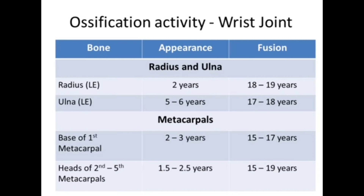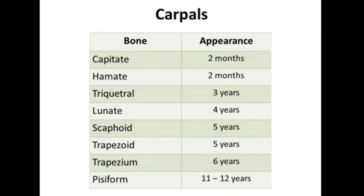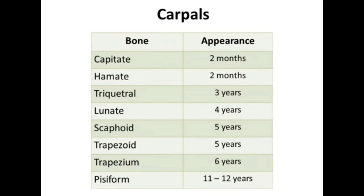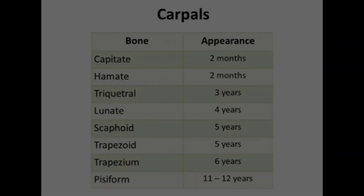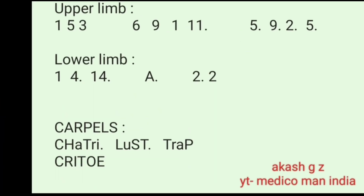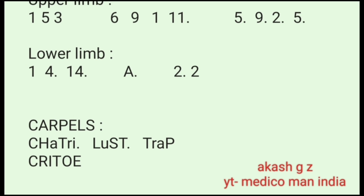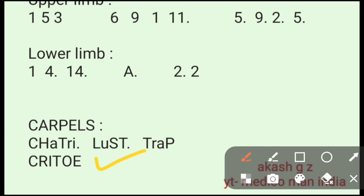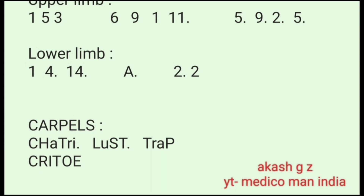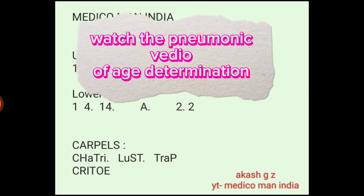For the carpals, you can remember the mnemonic: Chatri Lust Trap — capitate, hamate, triquetral, lunate, scaphoid, trapezoid, trapezium, and pisiform. I have already made a mnemonic video for this.